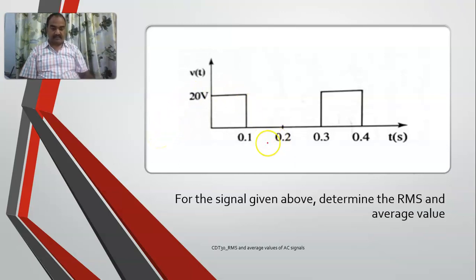It can be seen clearly that the wave is repeating for every 0.3 seconds, which means t is equal to 0.3 seconds. And in this one, you can divide it into two parts. This is one part where the value is 20 volts up to 0.1 and from 0.1 to 0.3, its value is 0 volts.